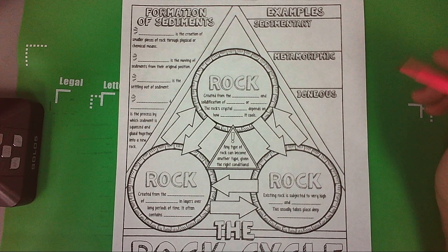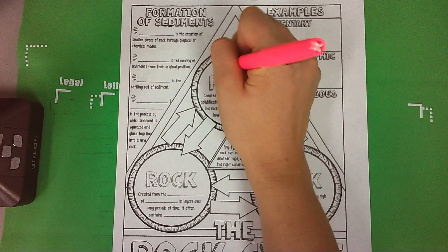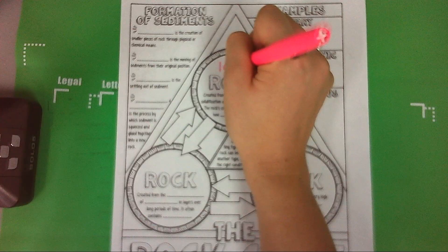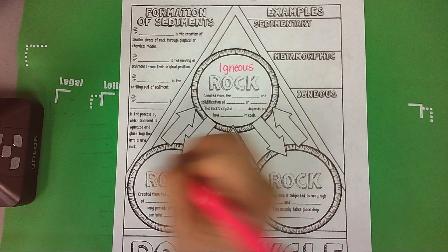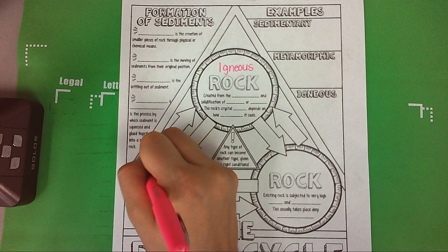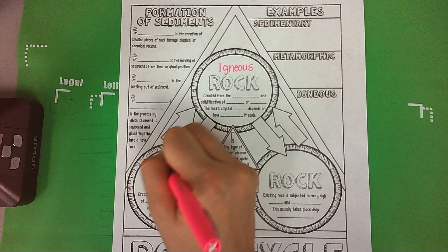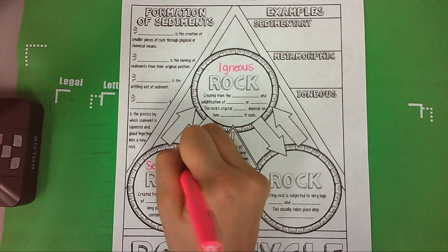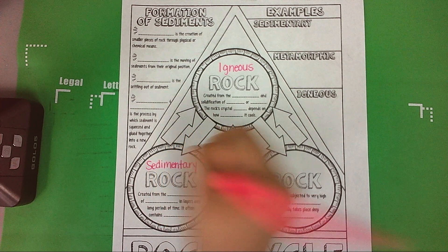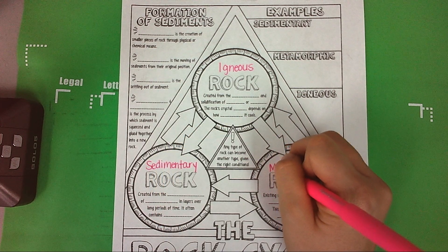There's three different types of rock. There is igneous rock, there is sedimentary rock, and metamorphic rock.